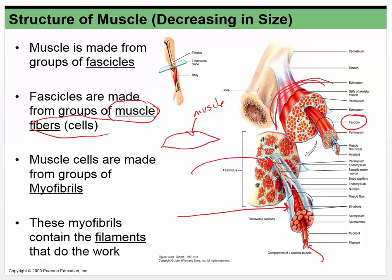This motor neuron has to get the message all the way inside to the tiny filaments in there to get the signal so they can all contract at the same time. When we send the signal down through our motor neurons and say 'Hey, muscle contract,' the whole area innervated by that particular motor neuron has to contract. These little filaments inside the structure called the myofibril are what's actually doing the work.